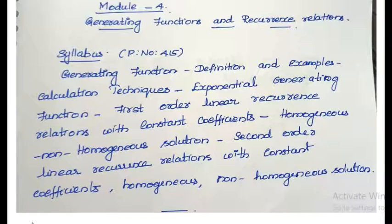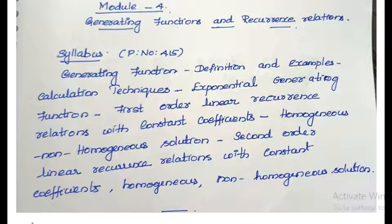I have given an outline of the syllabus for the fourth module. The topics to be covered are: first, generating functions — basic definitions, examples, and calculation techniques. Next is exponential generating functions, followed by first-order linear recurrence relations with constant coefficients, both homogeneous and non-homogeneous. Then second-order linear recurrence relations with constant coefficients, homogeneous and non-homogeneous solutions. In this video we will discuss generating functions and examples.